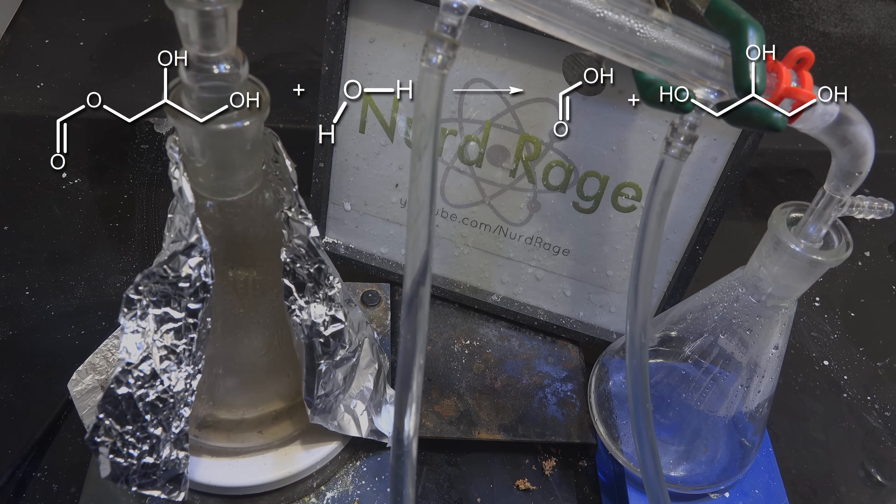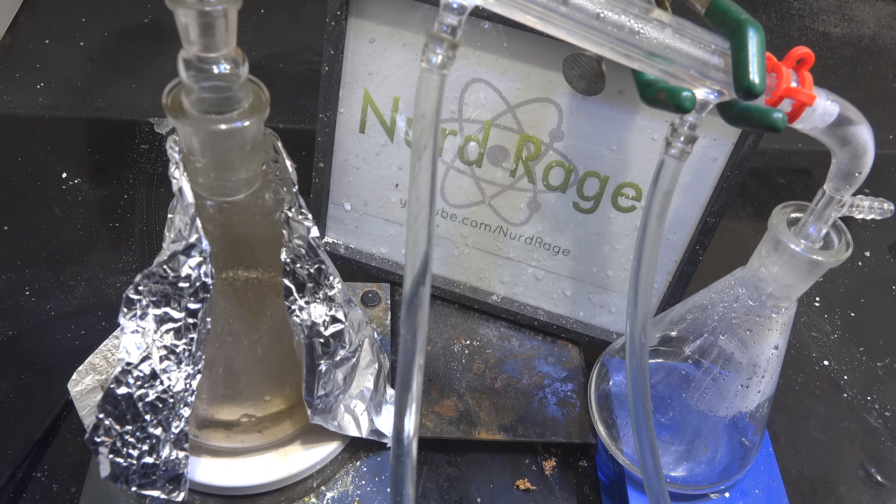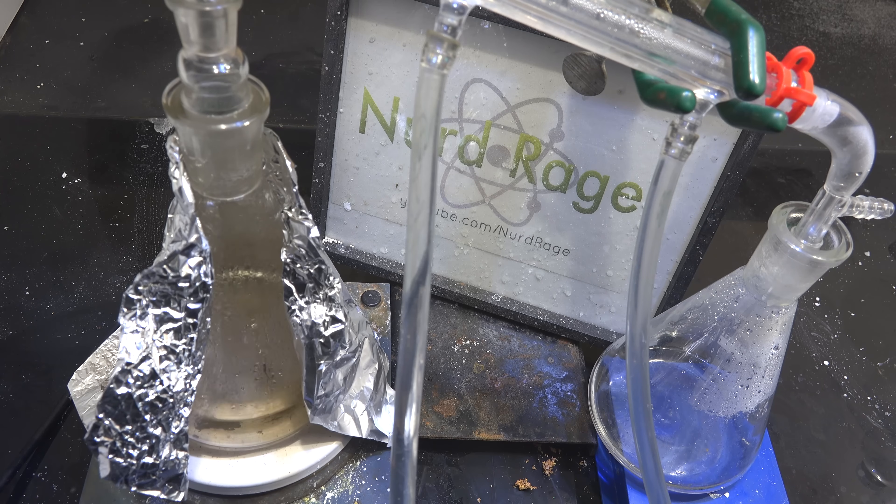Oxalic acid has water in it that will cause hydrolysis of the glycerol monoformate. The formic acid will now distill over. Essentially this step is where we're releasing and collecting our formic acid.